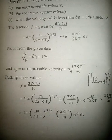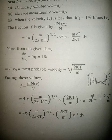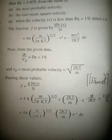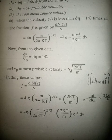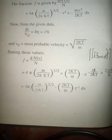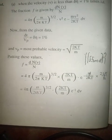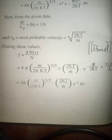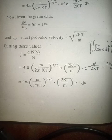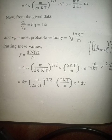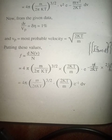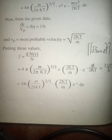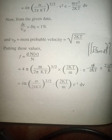From the given data, dv/vp = Δη = 1 percent, and vp is the most probable velocity where vp = √(2kT/m). Putting these values, the fraction f = dN/N.